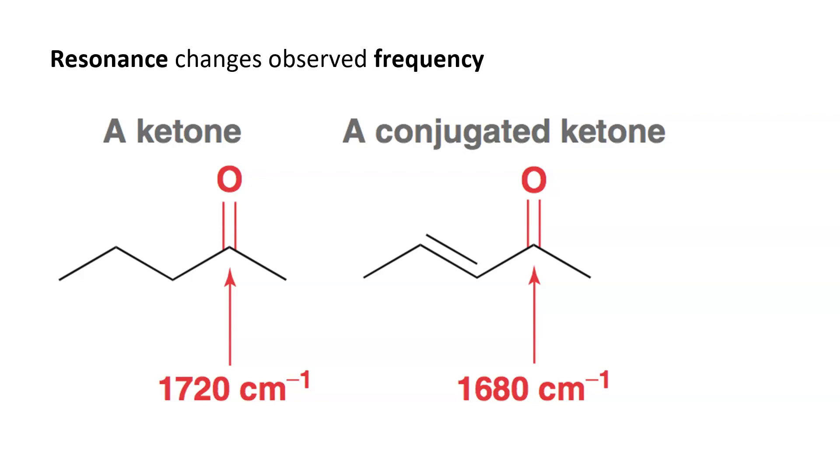Resonance changes your observed frequency. If you have a conjugated system, there will be more resonance structures, which, well, there are more resonance structures where you've got a single bond. That lowers the frequency. Let me illustrate.